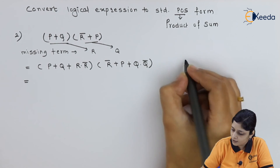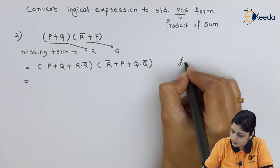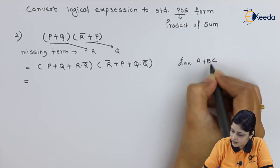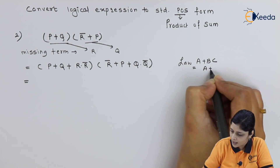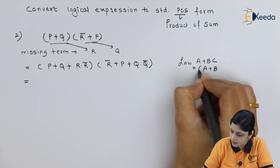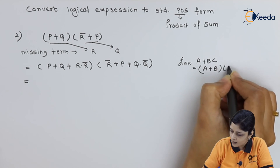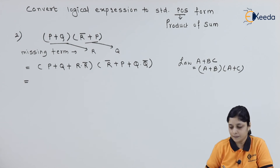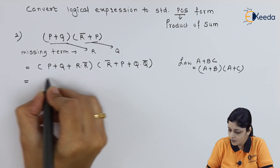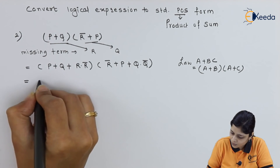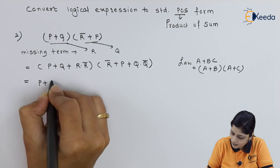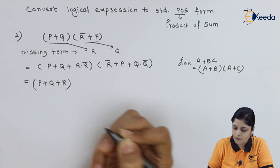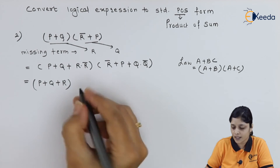Apply the law: A plus (B · C) equals (A plus B) · (A plus C). For the first bracket (P plus Q), R is missing, so adding (R · R̄) and expanding gives (P plus Q plus R) in one bracket.